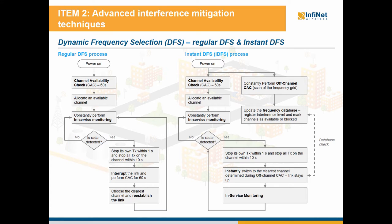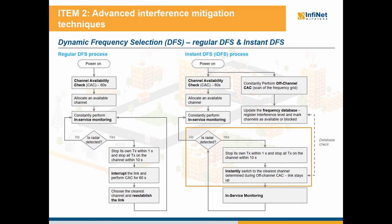In case of instant DFS, the initial process is the same but the difference is that after power on, a constant off-channel CAC takes place and the additional radio module scans the whole defined frequency range. A frequency database is regularly updated, the interference level is registered for each channel, and the channels are also marked as available or blocked. In case that radar is detected or the SINR falls below the threshold, the transmission on the used frequency stops within 10 seconds but no link interruption takes place. Instead, instant switchover is performed to the clearest channel at that time by consulting the frequency database maintained during the off-channel CAC.